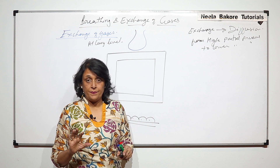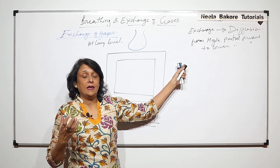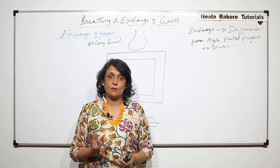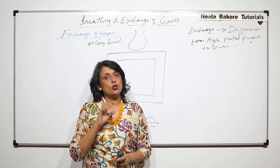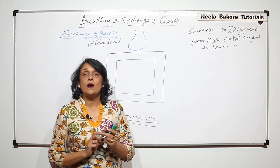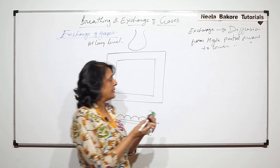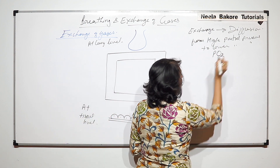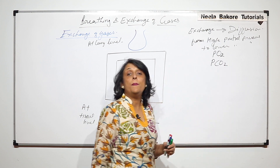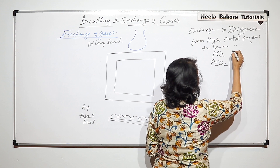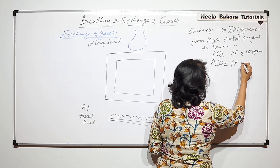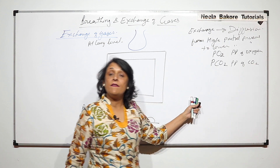What exactly is partial pressure? In a mixture of gases, the pressure exerted by a particular gas is called its partial pressure. If we are talking about the partial pressure of oxygen, we write it as PO2. If we are talking about the partial pressure of carbon dioxide, we write it as PCO2. These are the notations we will use for the values going forward.